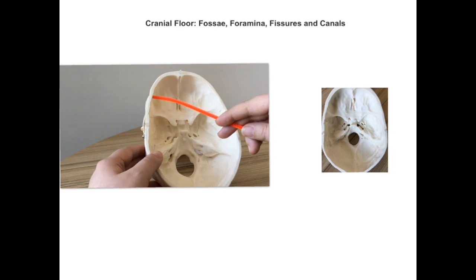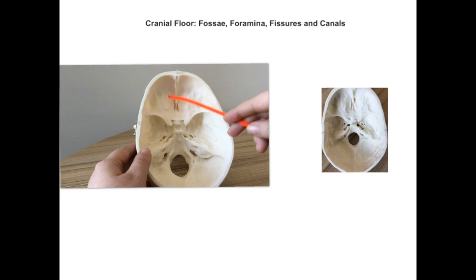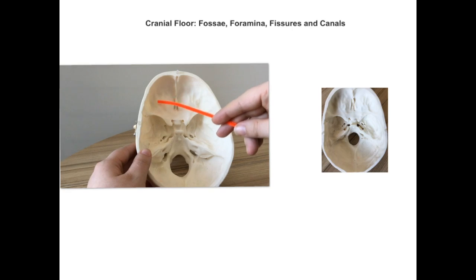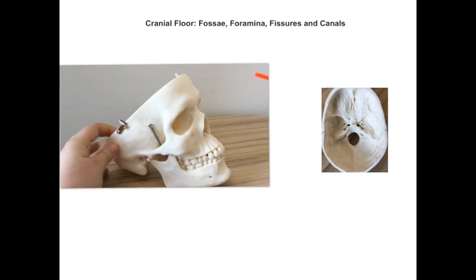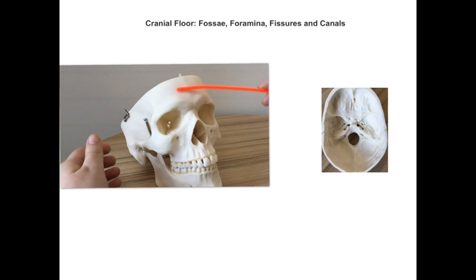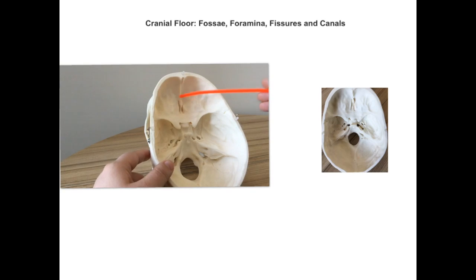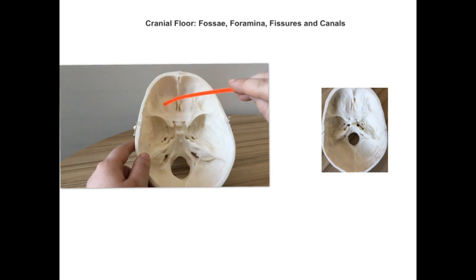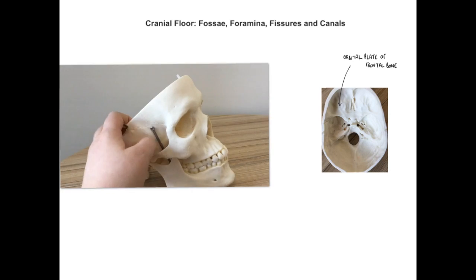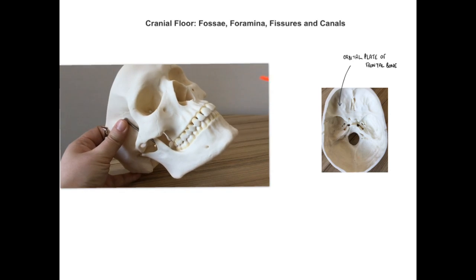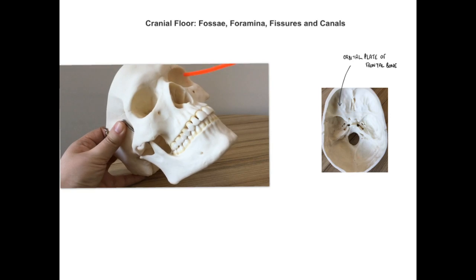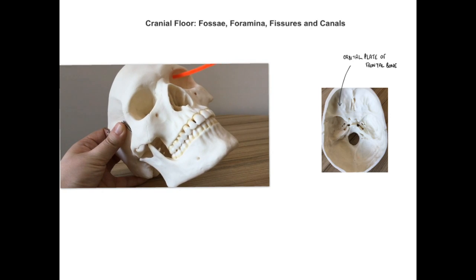Coming to the anterior cranial fossa, this part here is part of the frontal bone — the large bone responsible for our forehead — which at the bottom curves under to form the orbital plates, essentially the roof of the orbits. You can see them here: the orbital plates of the frontal bone.